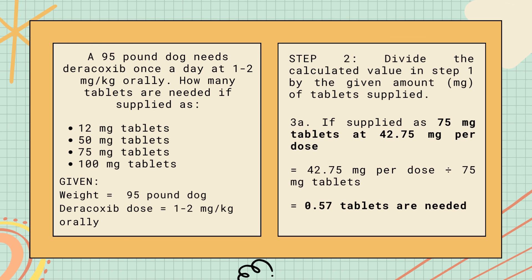Time is up. Let us see if your answers are correct. In 3a: if supplied as 75 mg tablets at 42.75 mg/dose — 42.75 divided by 75 equals 0.57 tablets. In 3b: if supplied as 75 mg tablets at 85.50 mg/dose — 85.50 divided by 75 equals 1.14 tablets.